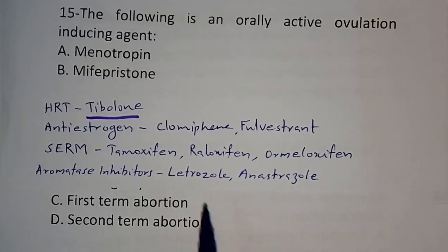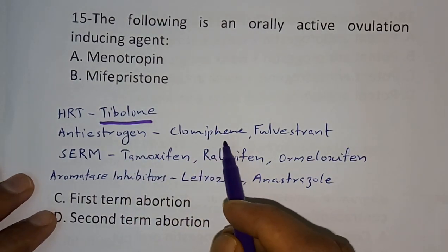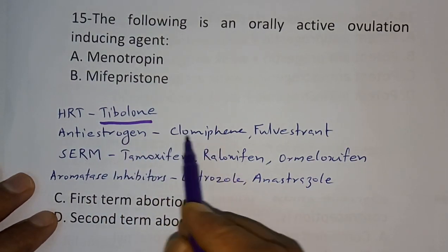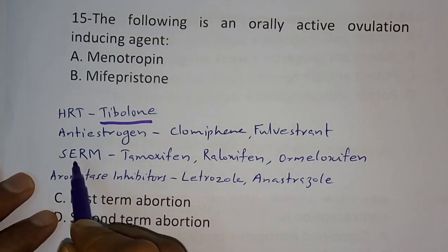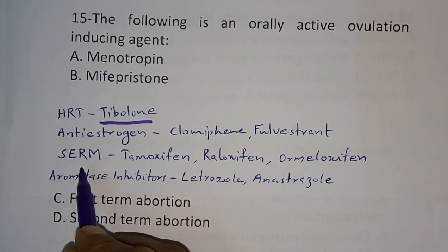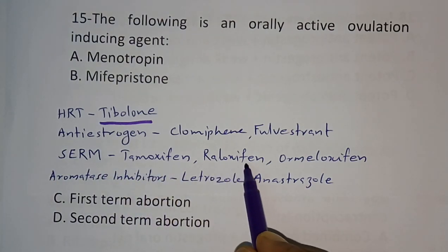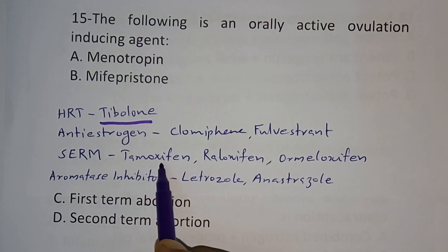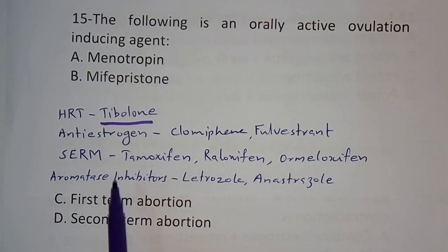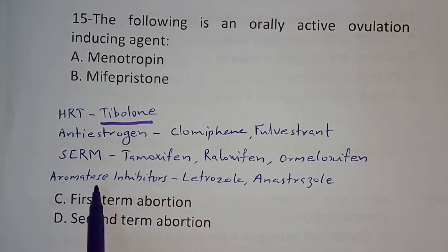Some important drug classifications: Clomiphene citrate comes under anti-estrogens; another example is fulvestrant. Next, SERMs — selective estrogen receptor modulators — include tamoxifen, raloxifene, and toremifene. Lastly, aromatase inhibitors include letrozole, anastrozole, and exemestane.